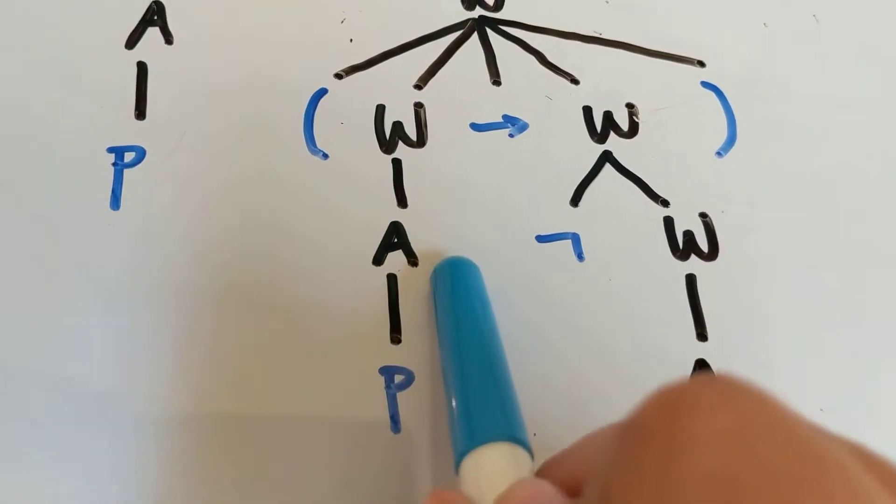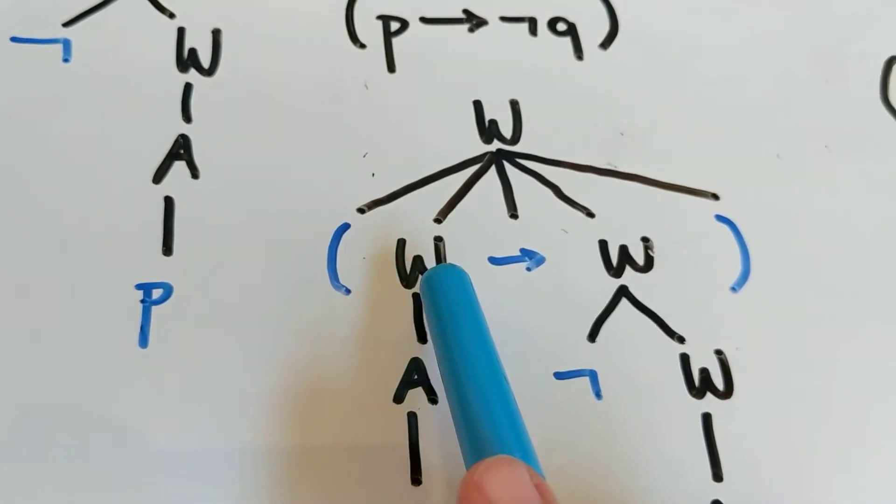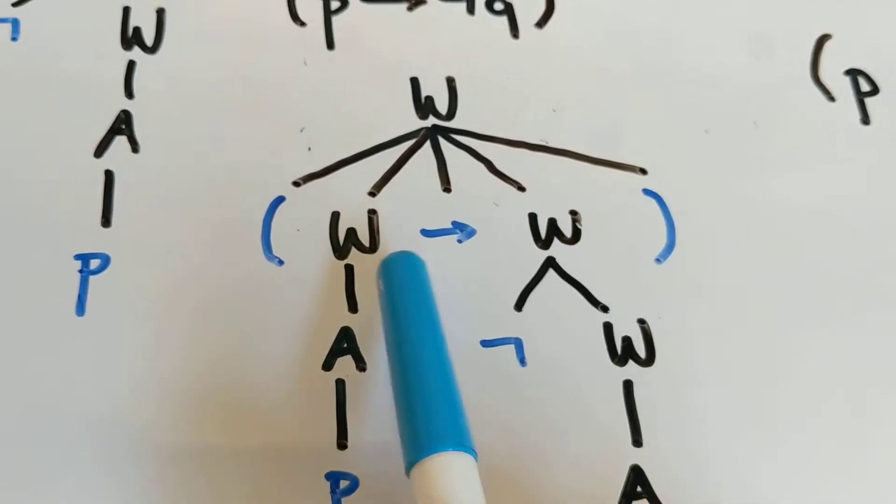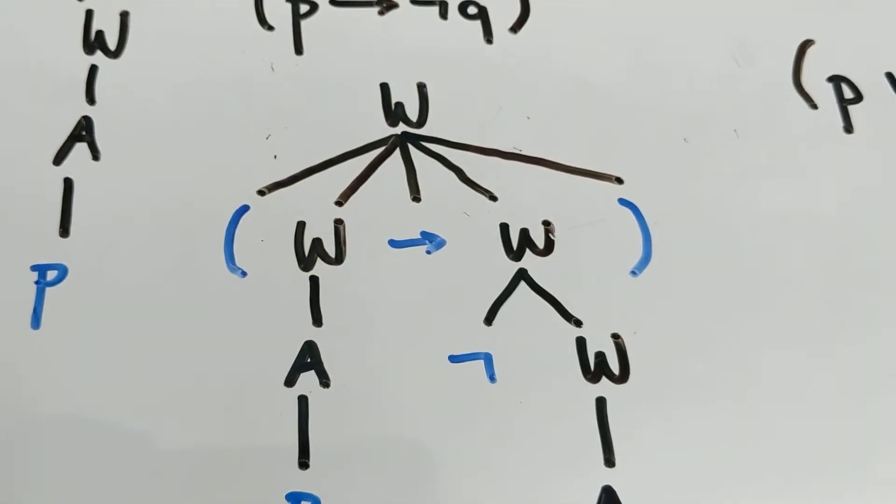And then we can build P into an atomic statement, the atomic statement into a well-formed formula, and we have a rule that lets us combine two well-formed formulas together in this construction to make another well-formed formula.